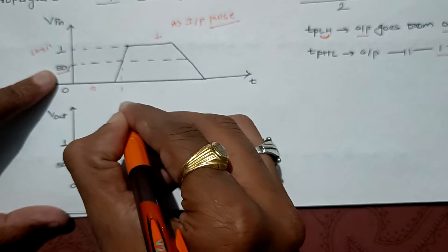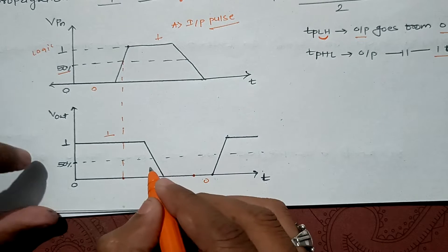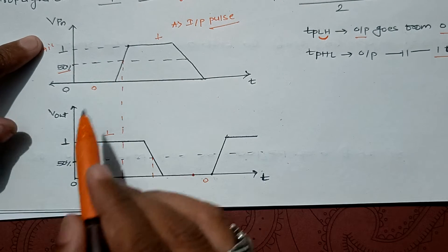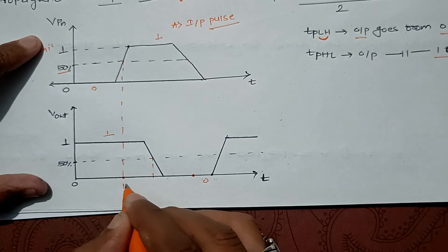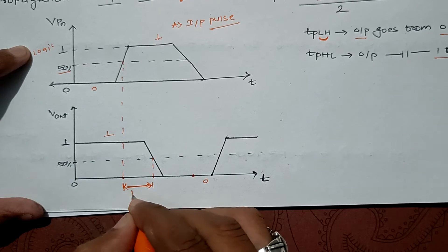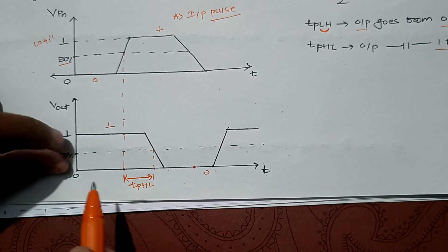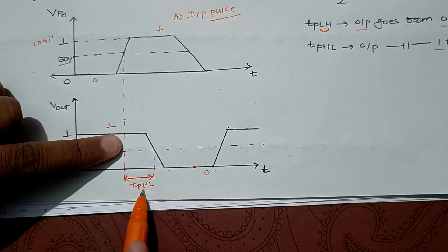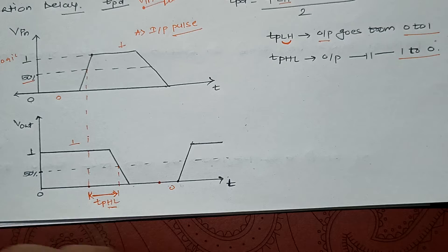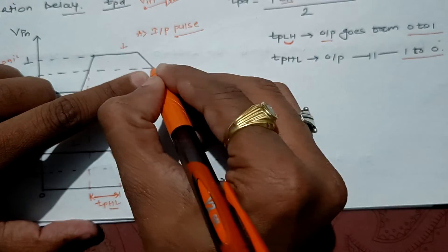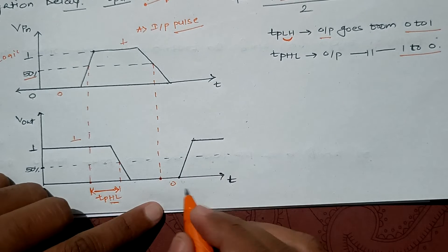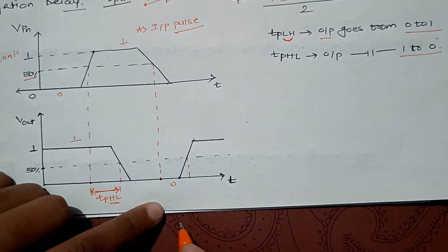To find tpHL, we take the 50 percent line of input and the 50 percent line of output where it switches from high to low. The time difference between input and output is called tpHL because it is switching from high to low.